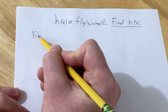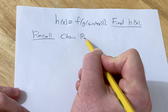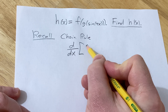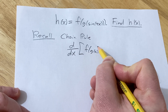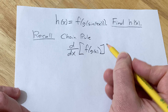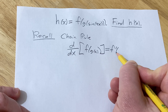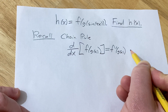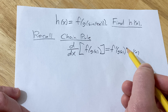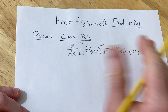First, recall the chain rule from calculus. The chain rule says that if you take the derivative with respect to x of a function — say f of g of x — you want to think of f as your outside function and g as your inside function. You take the derivative of the outside and evaluate it at the inside, leaving the inside untouched, then multiply by the derivative of the inside function, g prime of x. This is a very powerful rule from single variable calculus, and there is an extension to more than one variable as well, though that is a lot messier.